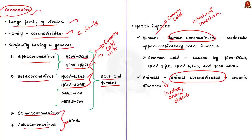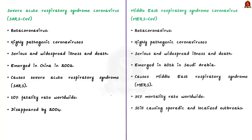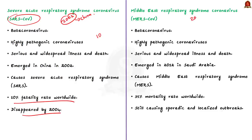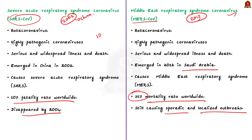Before SARS-CoV and MERS-CoV came into play, coronaviruses were thought to cause only mild illness in humans. Both SARS-CoV and MERS-CoV are beta coronaviruses and are highly pathogenic. SARS-CoV emerged in China in 2002, causing severe acute respiratory syndrome with a 10% fatality rate worldwide, and is said to have disappeared by 2004. Then in 2012, MERS-CoV emerged in Saudi Arabia, causing Middle East Respiratory Syndrome with almost a 35% mortality rate worldwide — this virus is still causing sporadic and localized outbreaks.